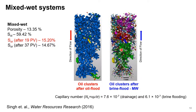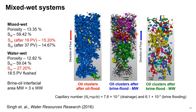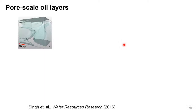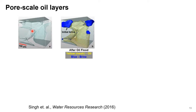We obtained about 75% recovery in the mixed-wet case. Compared with the same conditions in a water-wet case, you can clearly see the shape of oil after residual saturation is obtained is quite different — mostly droplet-like structures in the water-wet case with about 50% recovery, but mostly plate-like structures in the mixed-wet case. Zooming into a particular region: after drainage you have oil sitting in the larger pore space as a non-wetting phase, with water in the pore corners.